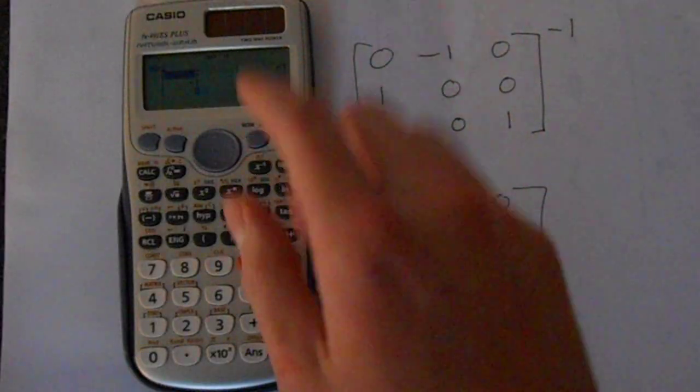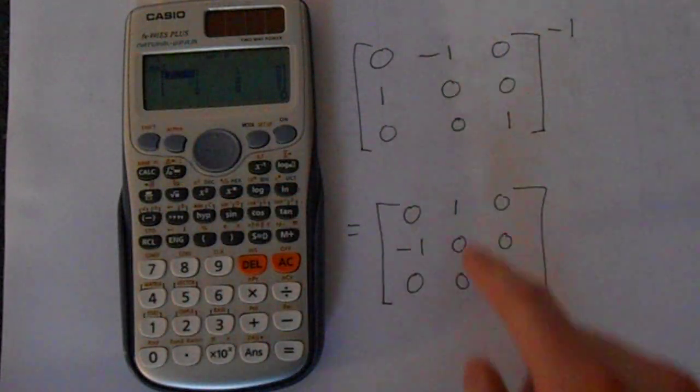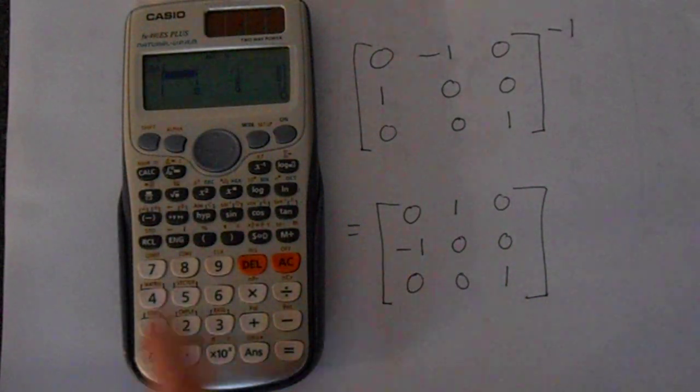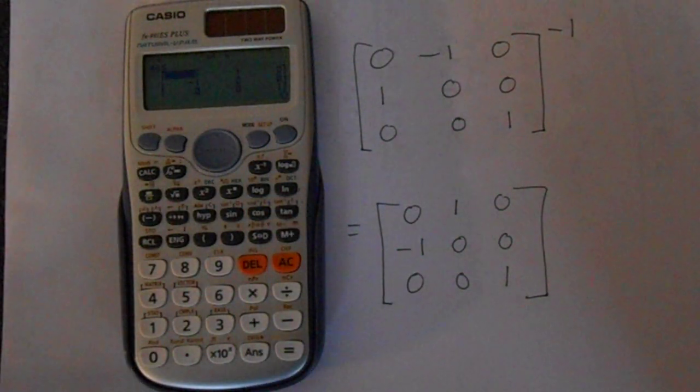Basically, quick review: mode, put it into the correct mode, fill the matrix with what you need, then access the function with shift matrix, and then use this button here to find the inverse.